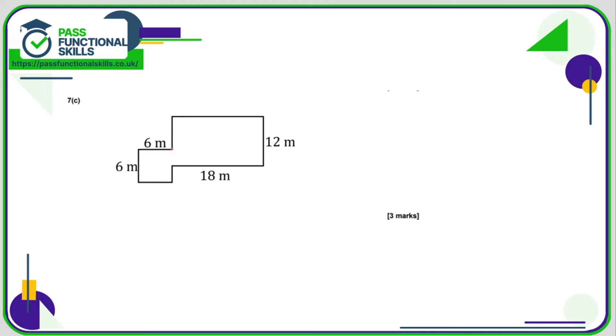For C, if I just do a little line here, I've now got a square 6 by 6, so that's a 36. This is an 18 times 12, which is 216. So therefore the overall area is these two numbers added together, which comes to 252 square metres.